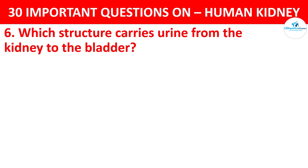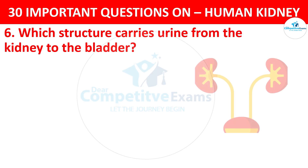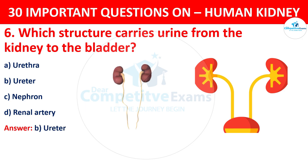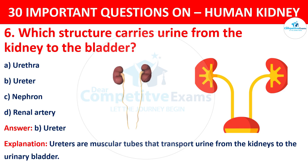Question 6. Which structure carries urine from the kidney to the bladder? Your options are: Urethra, Ureter, Nephron, or Renal Artery. The correct answer is B, i.e. Ureter. Ureters are muscular tubes that transport urine from the kidneys to the urinary bladder.